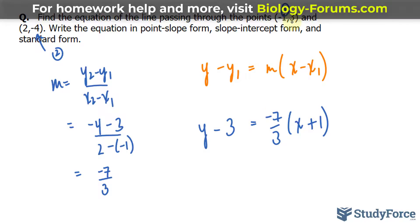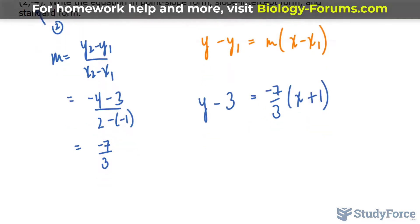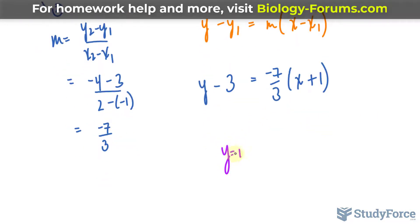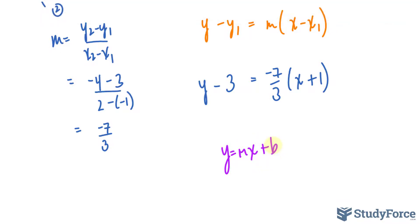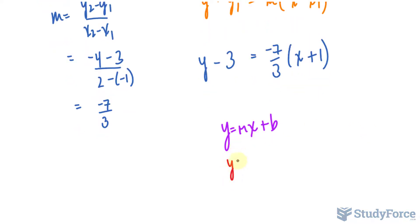Let's do the slope-intercept form. This is the most common one, y is equal to mx plus b, where b is the y-coordinate of the y-intercept. We already know m, it happens to be negative 7 over 3x.